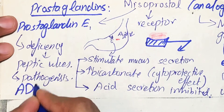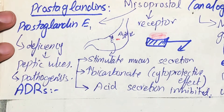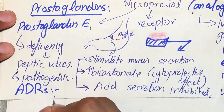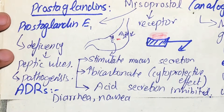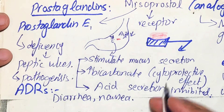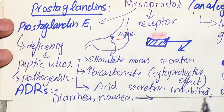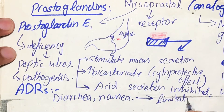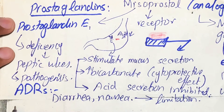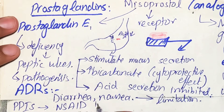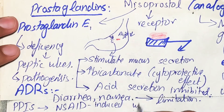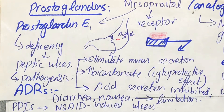If we talk about its ADRs — adverse drug reactions — they include diarrhea and nausea, which are common dose-related adverse effects. These adverse effects cause the limitation of this agent. That is why we mostly use PPIs — proton pump inhibitors — in the case of NSAID-induced ulcers. So this was all about prostaglandins for peptic ulcer.